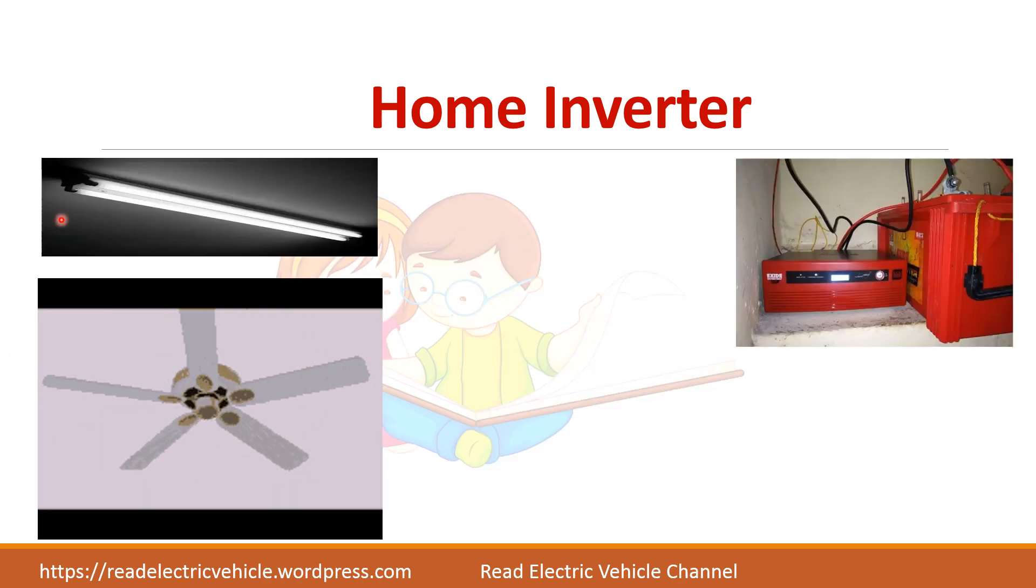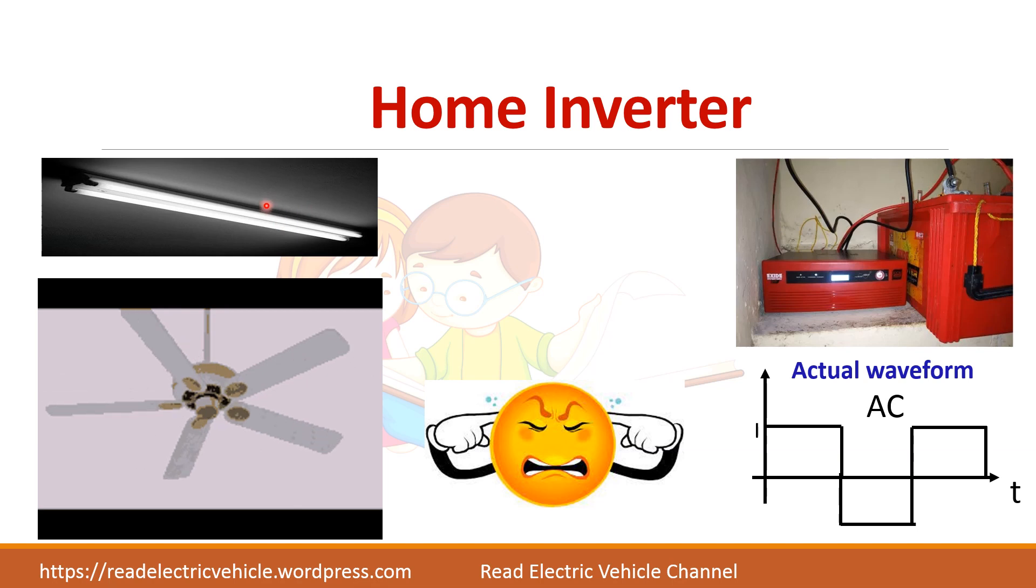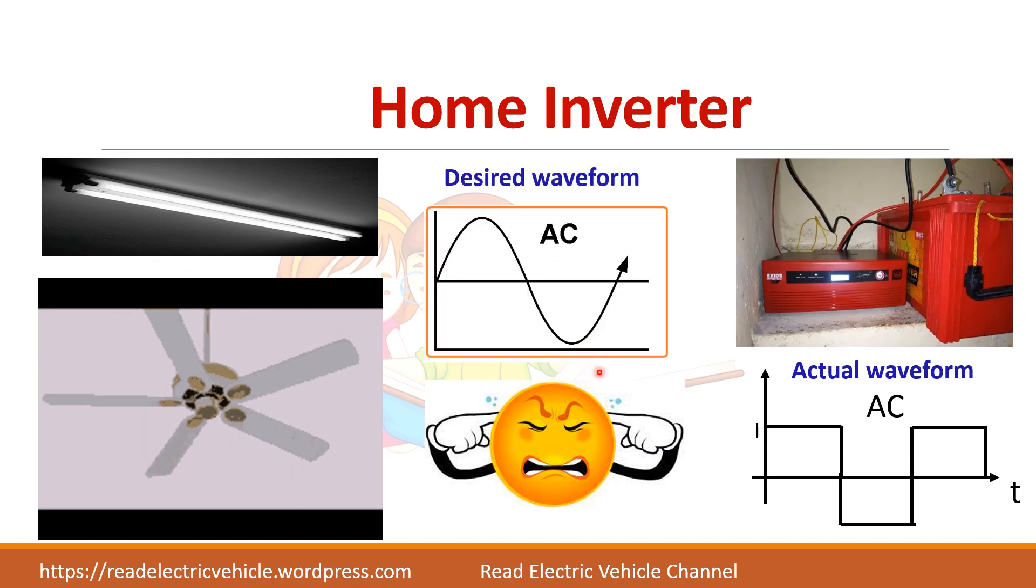Have you ever noticed that when you supply the fan and tube light from a home inverter sometimes you hear some humming noise and the speed of the fan may be slow, and if you are frequently feeding from an inverter this fan coil gets damaged quickly and the tube light also burns out easily. The reason is that this home inverter will actually give you a square wave output but our devices are designed to operate at a sinusoidal waveform. So why is this home inverter giving a square wave output instead of a sine wave output? Let us see that.